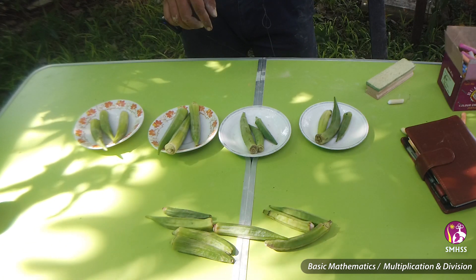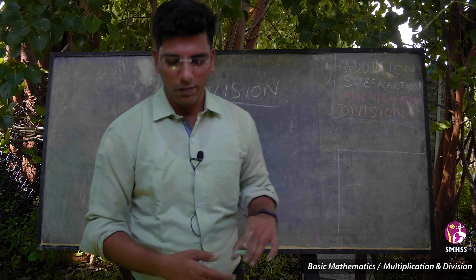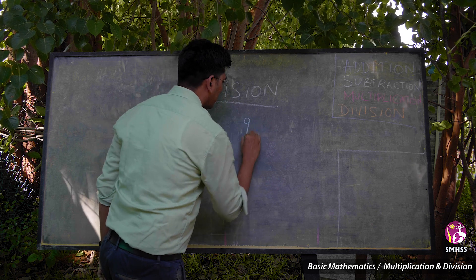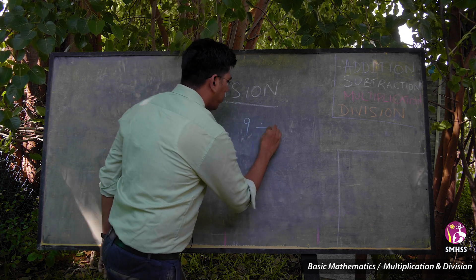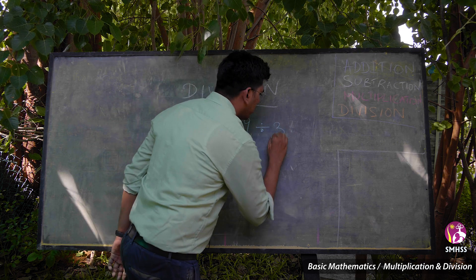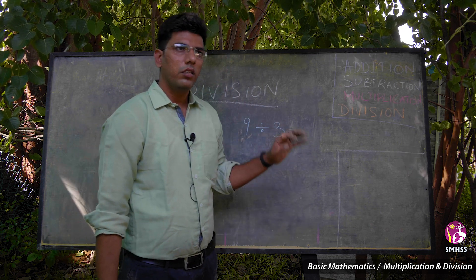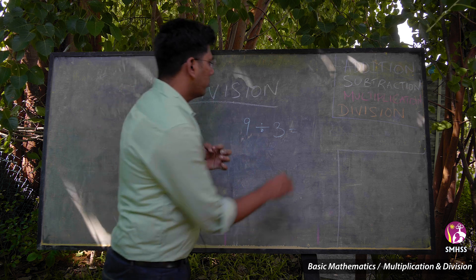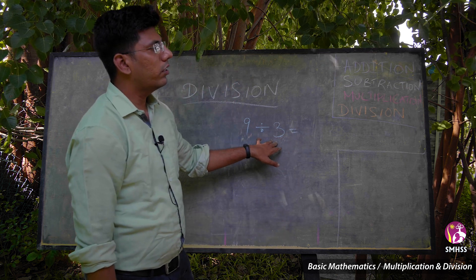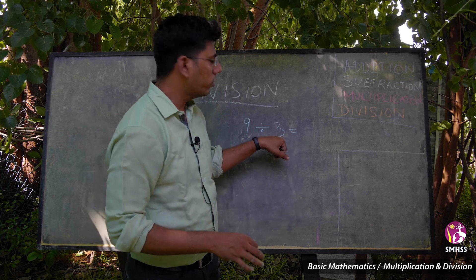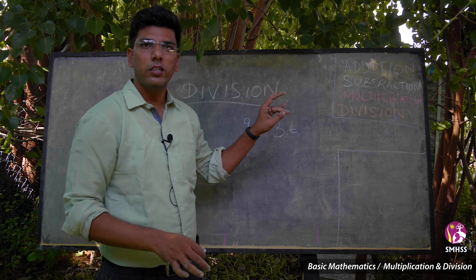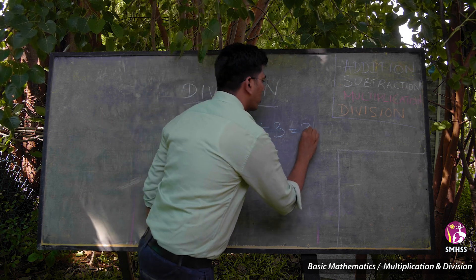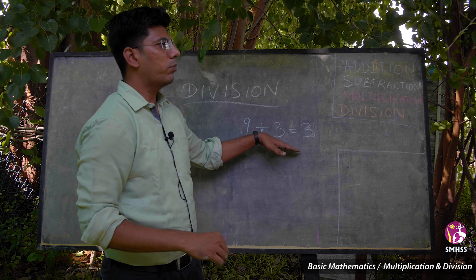In a division operation, division makes it easy. You need 9 ladies fingers and each plate has 3 ladies fingers, so how many plates do you want to take? You can calculate this by using the 3 times table: 3 ones are 3, 3 twos are 6, 3 threes are 9. So 3 threes are 9 — that is why division is called an inverse operation of multiplication.